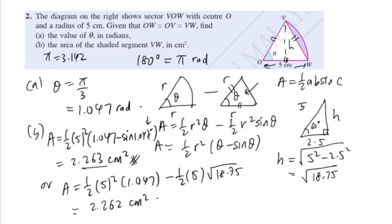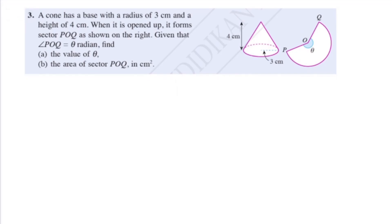Moving on to question 3. We have a cone with radius 3 and height 4. When opened up it forms a sector POQ. Given that angle POQ is theta radians, find theta. When you roll this up, the line OP joins with OQ to form the slant height of the cone. So the radius of sector POQ is the slant height. Using Pythagoras: slant height equals root of (4 squared plus 3 squared) equals 5. So the radius of sector POQ is 5.